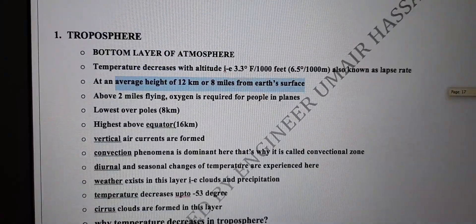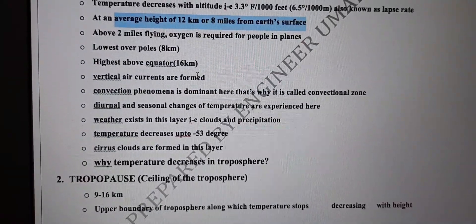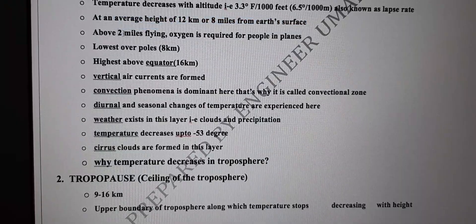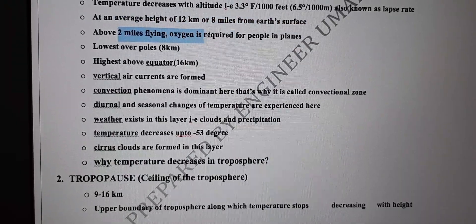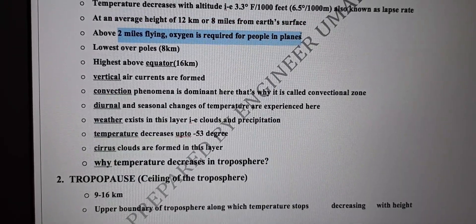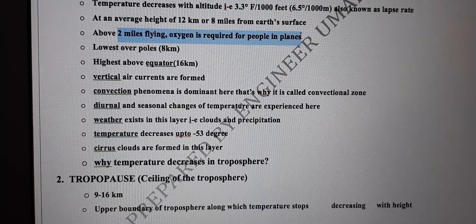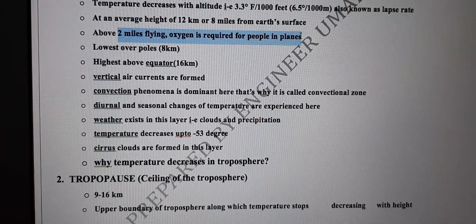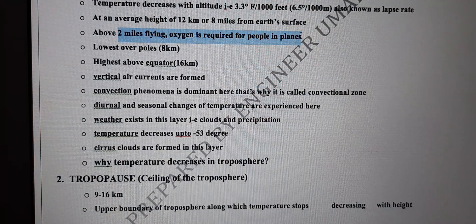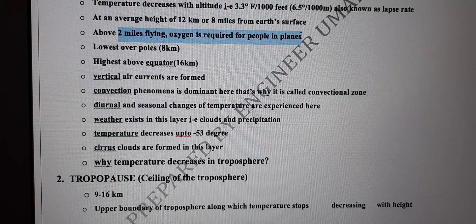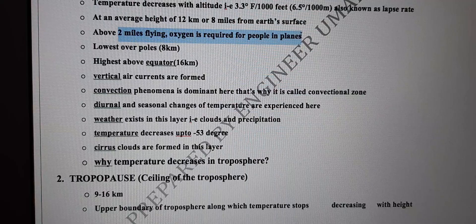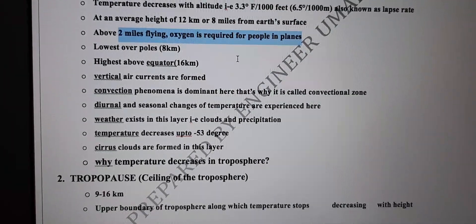From 12 kilometers above the surface of earth, above two miles, oxygen is required for people in planes. As you move two miles vertically upward, the density of air is reduced. As you move upward, density of air decreases, which means the amount of oxygen also decreases, and we need supplemental oxygen in planes at high altitude.